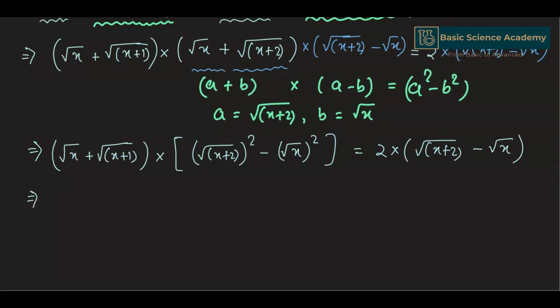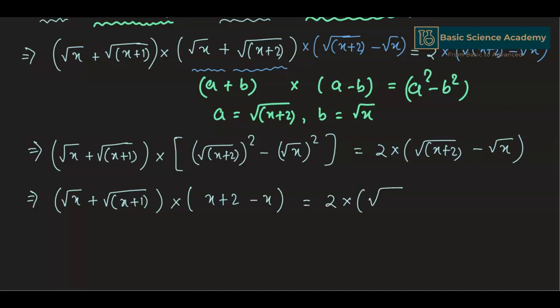So this gives us (square root of x + square root of (x+1)) multiplied by (square root of (x+2) squared minus square root of x squared). Since (x+2) - x = 2, the plus x and minus x cancel out to give 2.